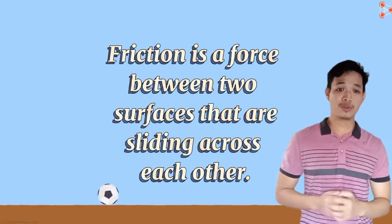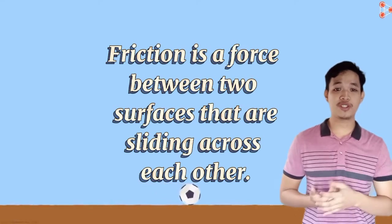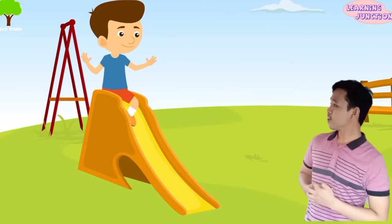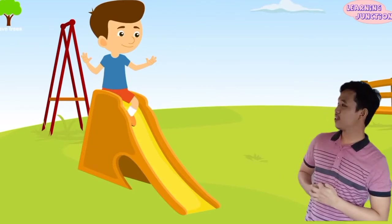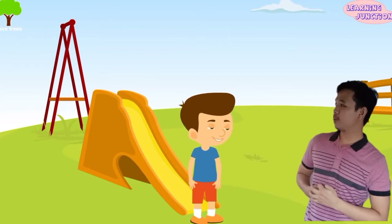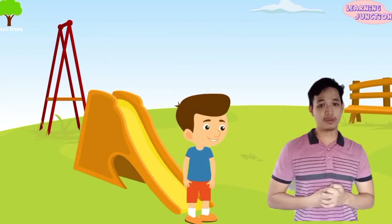Hello guys, today we are going to talk about friction. Friction is a force between two surfaces that are sliding or trying to slide across each other. For example, as you can see, the child is sliding through the slide in the playground, and the friction makes this difficult so that the child won't slide off the ground.